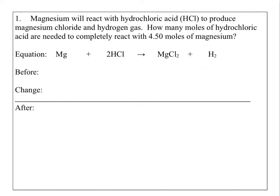Now let's do some sample problems. Magnesium will react with hydrochloric acid to produce magnesium chloride and hydrogen gas. How many moles of hydrochloric acid are needed to completely react 4.5 moles of magnesium? We're going to set up BCA charts: B for before, C for change, and A for after.